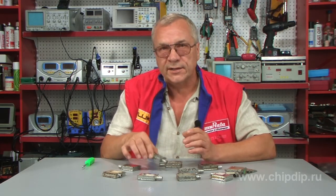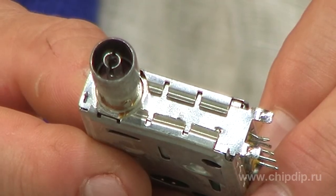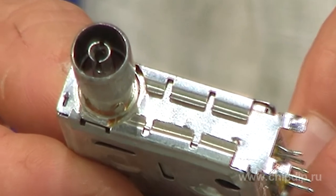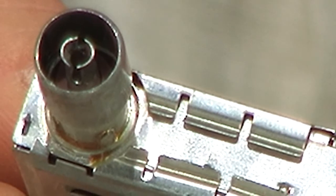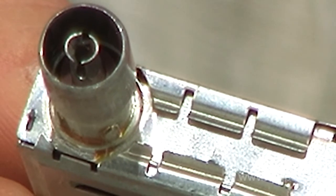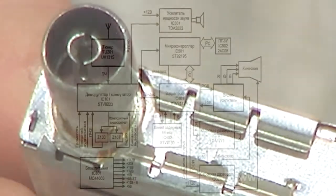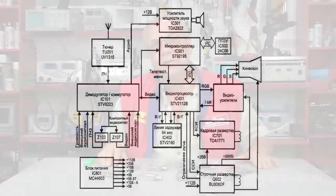Modern channel selectors have a common antenna socket for all subbands of received frequencies. The transformed signal then goes from the tuner to the intermediate frequency amplifier or radio channel unit.